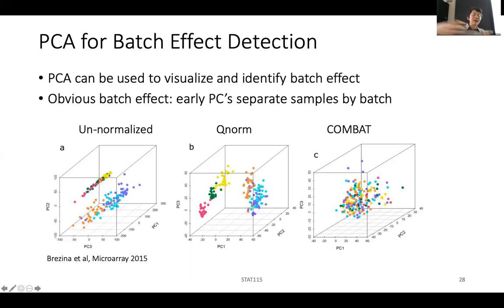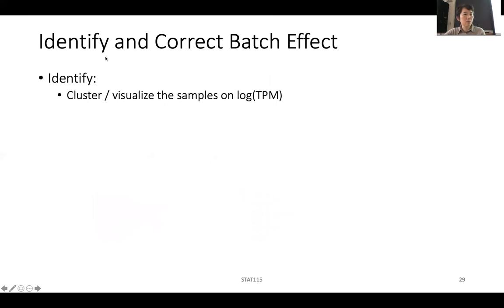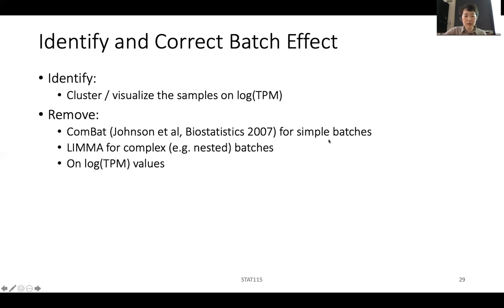Whereas after normalization, if the batches are no longer separating the samples — they are kind of all merged together — that's a reasonable indication you are removing the batch effect. Or it could be that you still see clustering, but in a more biologically meaningful way — all the tumors are here and all the normals are on the other side — and they are no longer different by the date of the experiment or the hospital. Then you know you have removed the batch effect. To detect this, do the clustering and visualize the samples using log TPM.